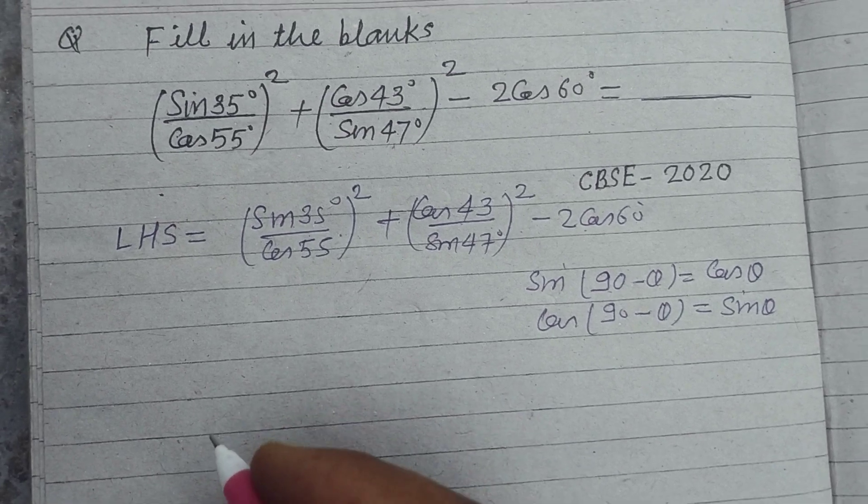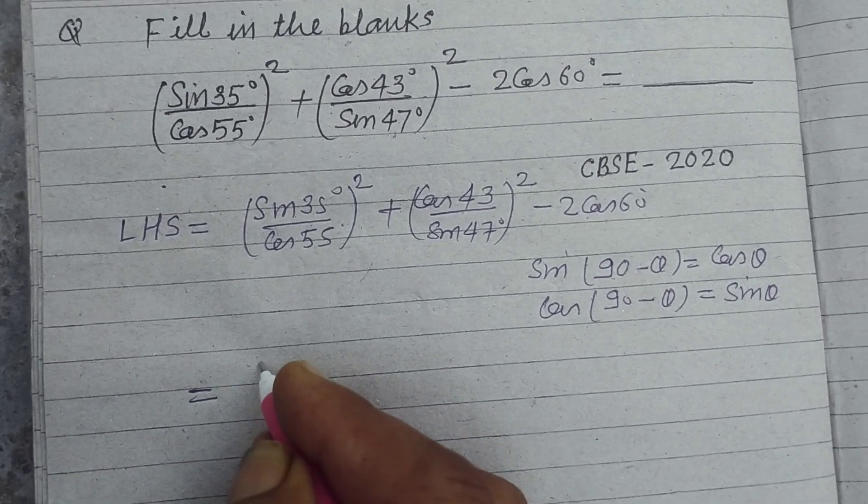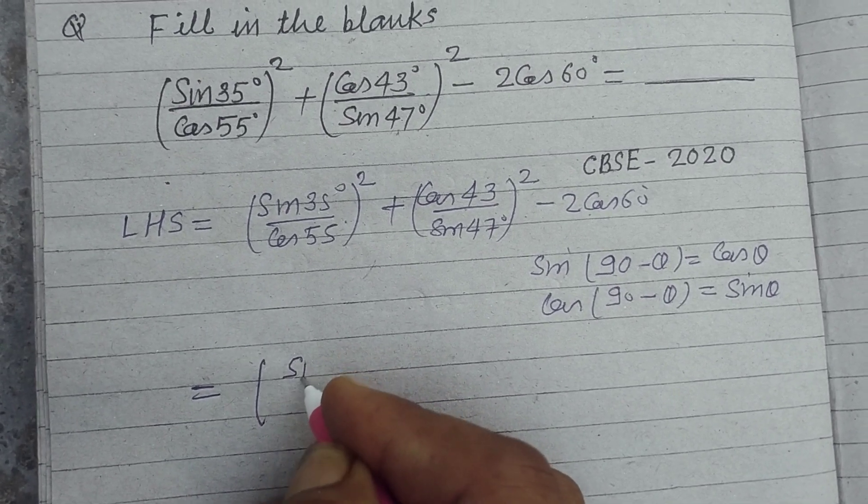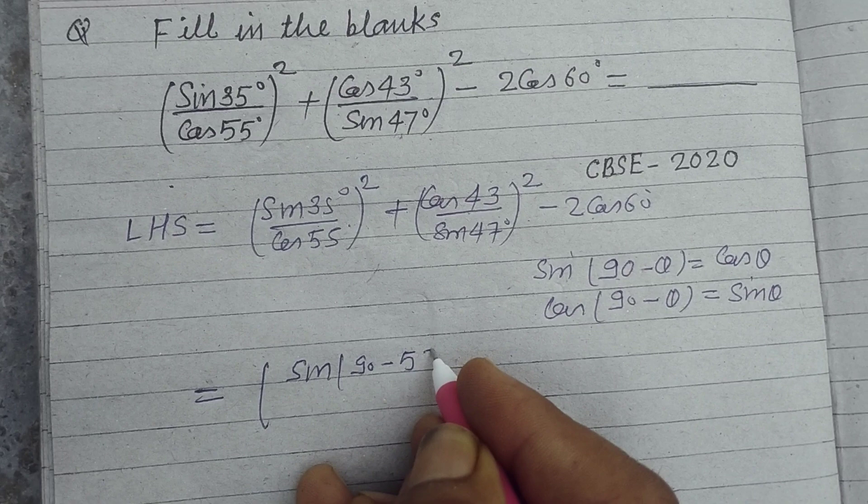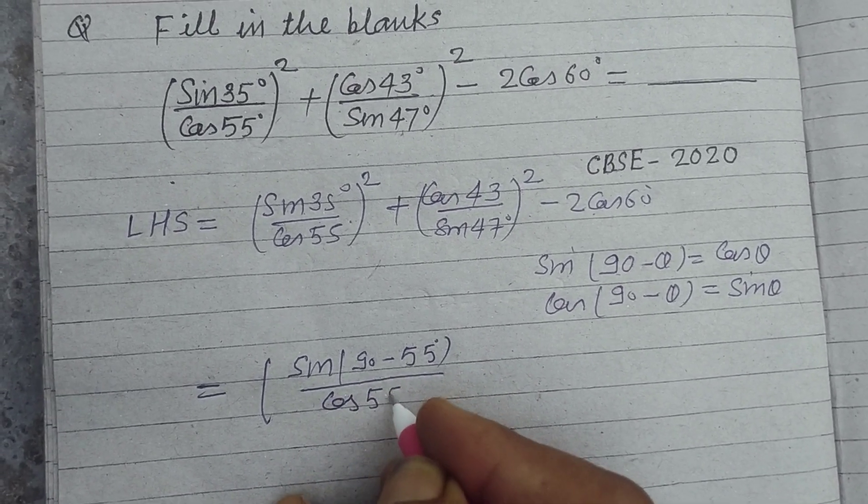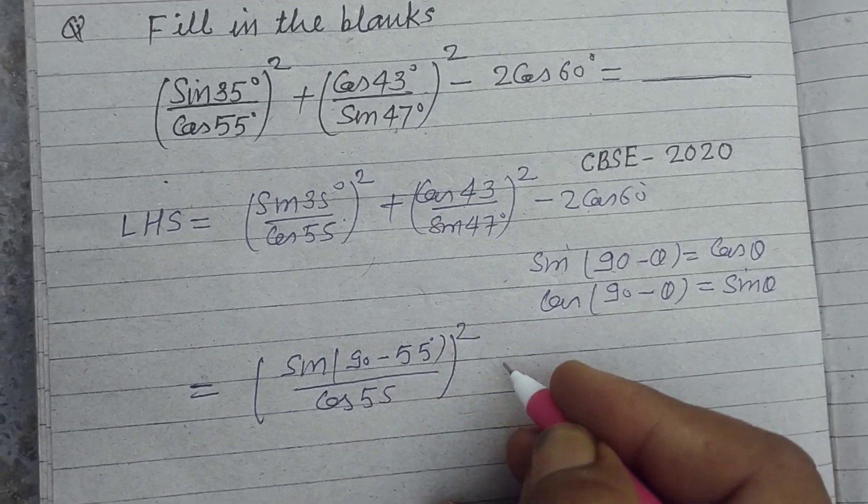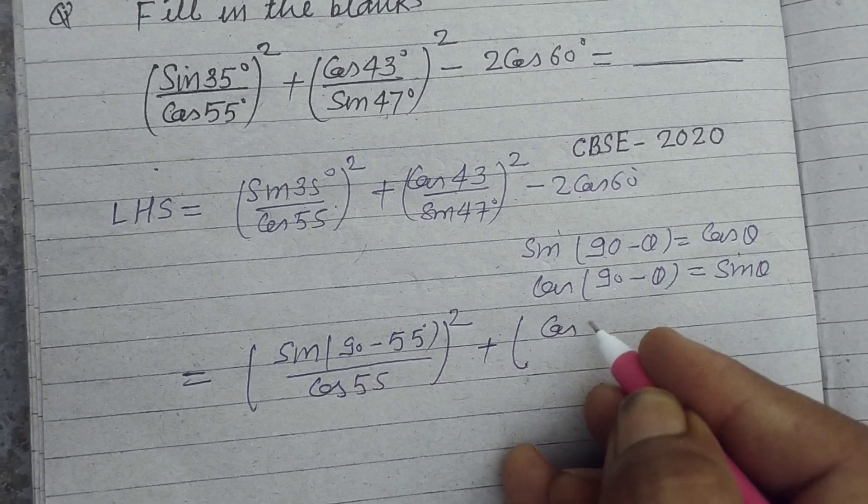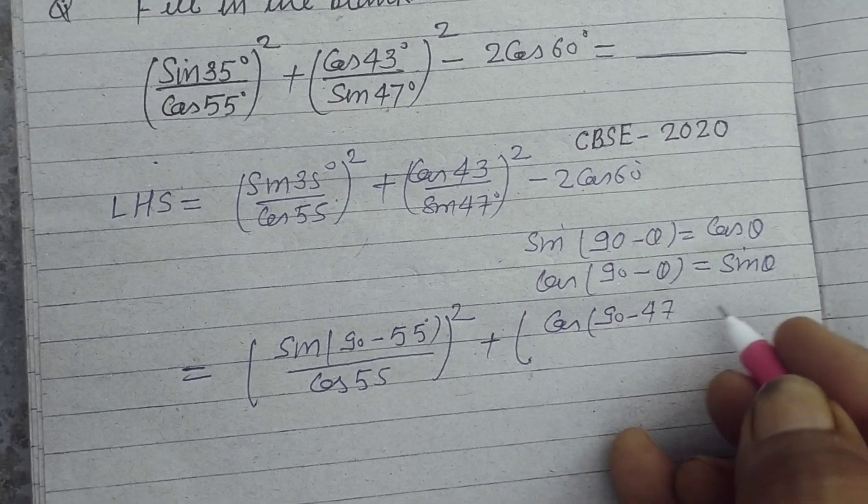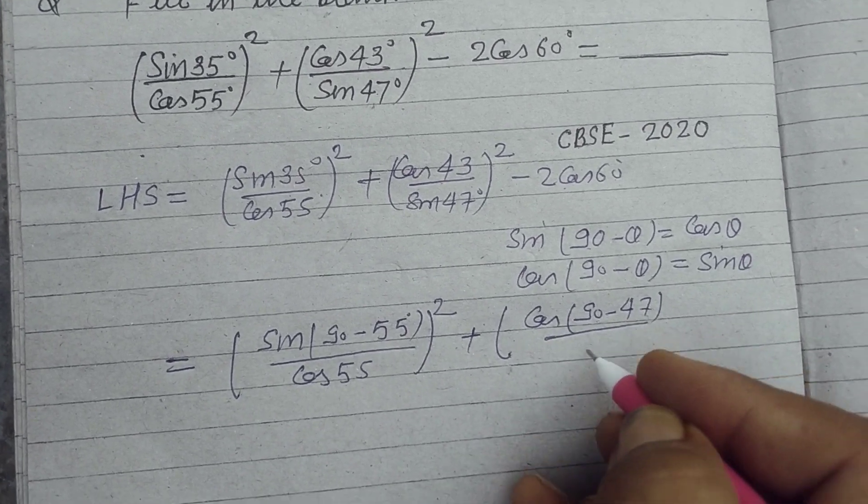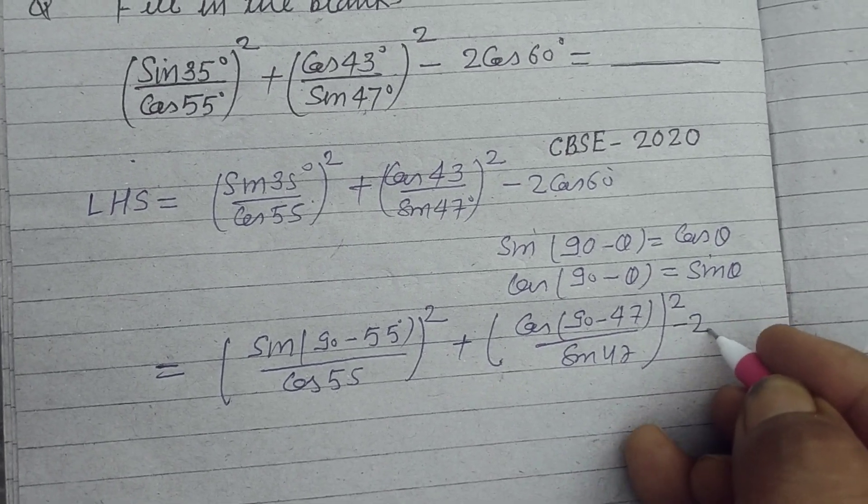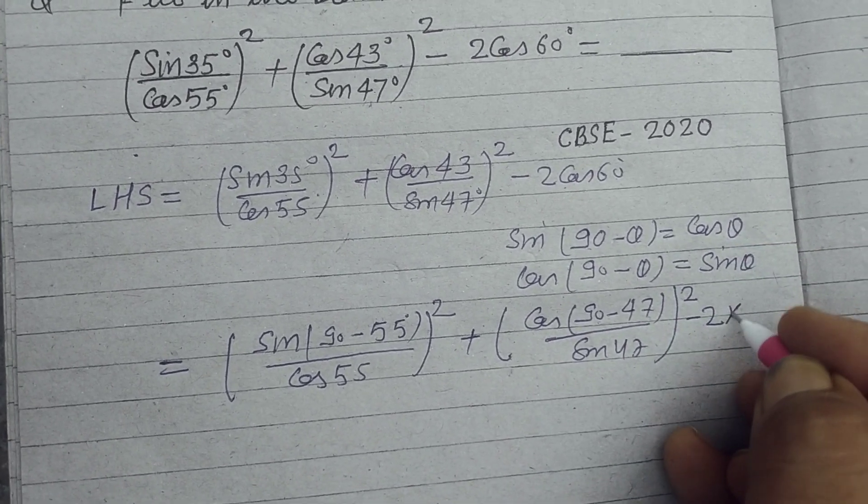So using this concept we can write sin 35° as sin(90° - 55°) upon cos 55° whole square. Cos 43° can be written as cos(90° - 47°) upon sin 47° whole square minus 2 cos 60°. The value of cos 60° is 1/2.